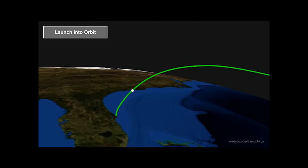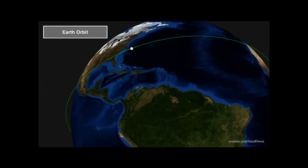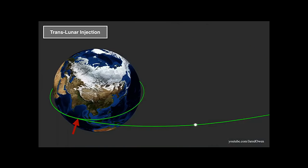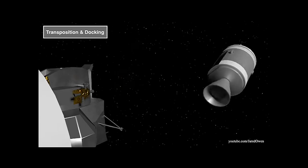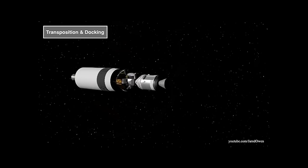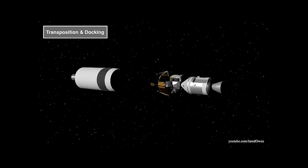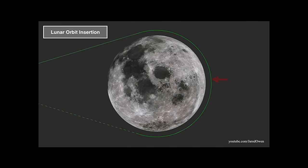The Saturn V rocket launches it and three astronauts from Cape Kennedy into Earth orbit. By accelerating at the right time, the translunar injection moved the spacecraft into a so-called free return orbit — by just coasting, it would travel around the moon and back to Earth. Right at the beginning of this three-day journey, the command and service module extracts the lunar module and docks with it. By braking on the far side of the moon, the spacecraft enters a lunar orbit.